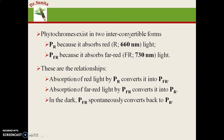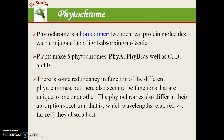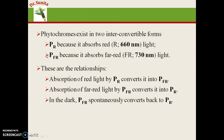Phytochromes exist in two interconvertible forms. One is the PR form — phytochrome that absorbs best at red light, at 660 nanometers, which is why it is termed PR. The second form is PFR — this phytochrome absorbs best at far-red light, at a wavelength of 730 nanometers. These two forms are interrelated.